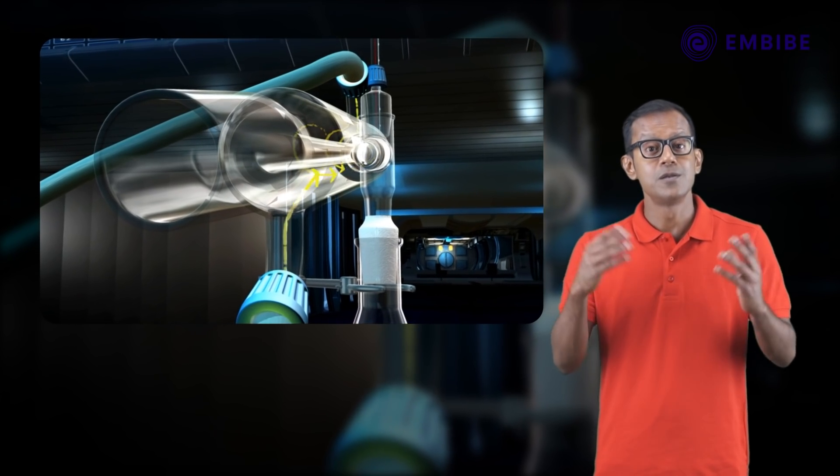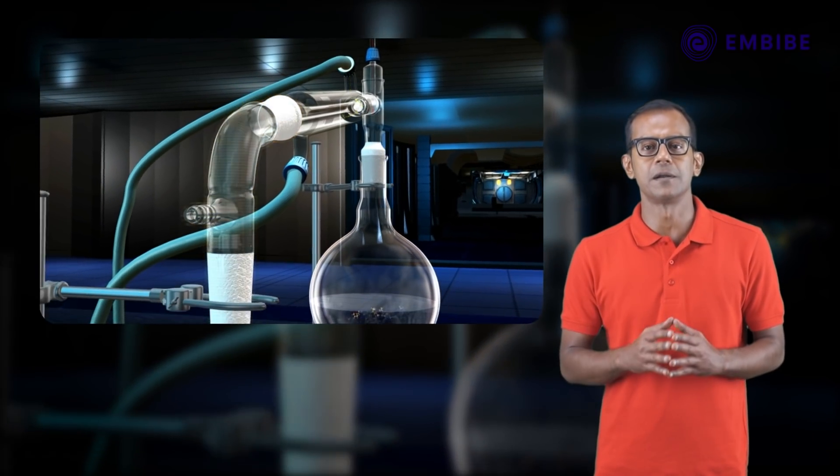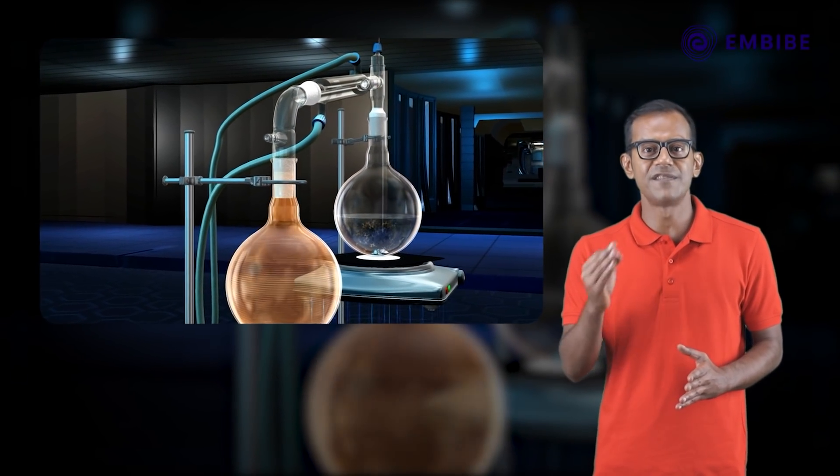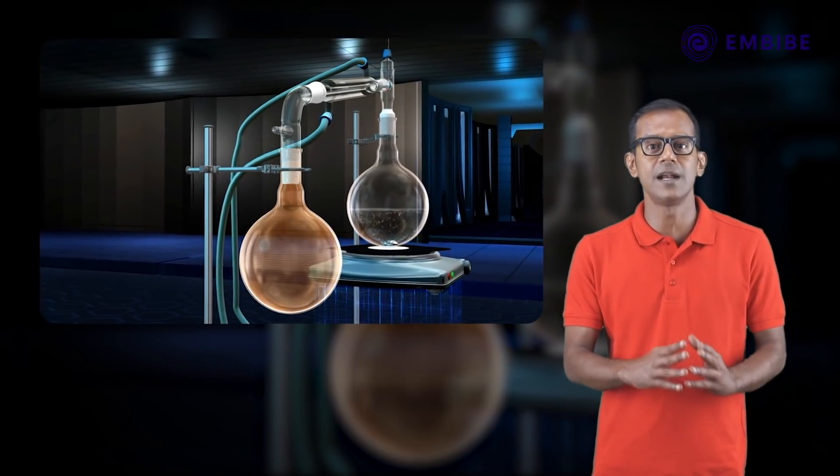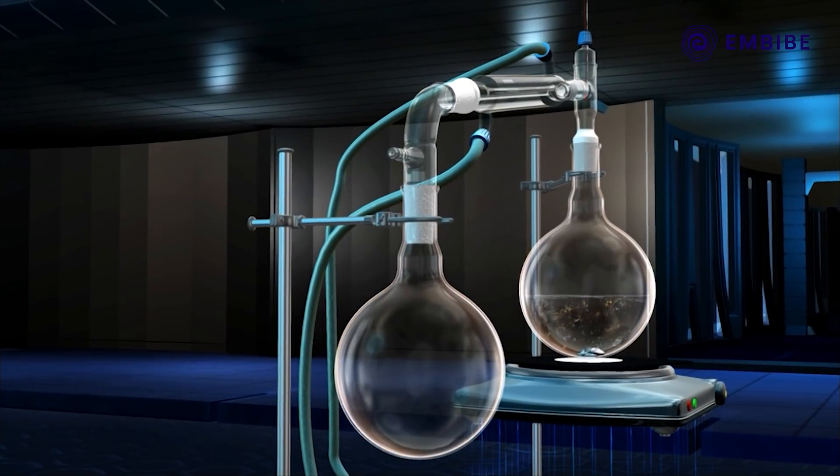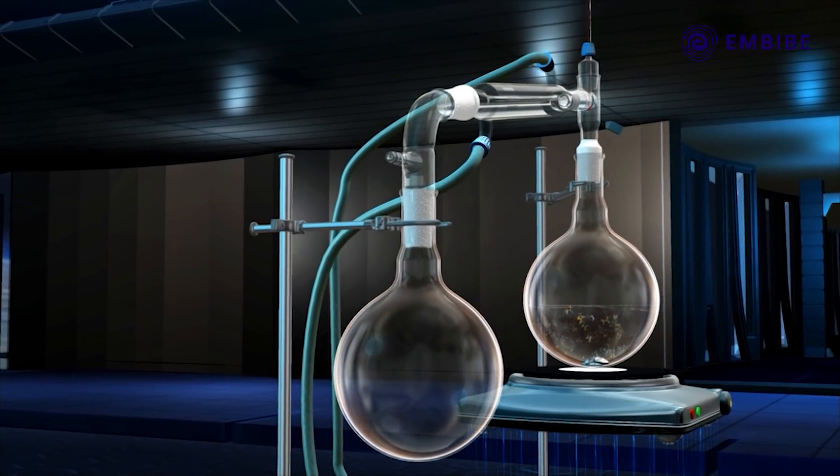The condenser tube has an inlet that lets cold water in and an outlet from which this water escapes. Join the other end of the condenser to a vacuum adapter. Now attach another RB flask, called the receiving flask, to the other end of the vacuum adapter.